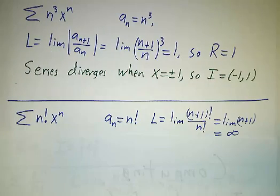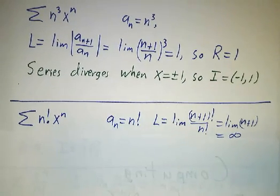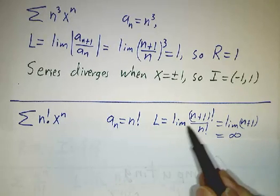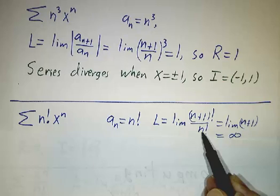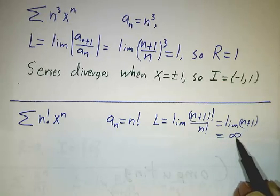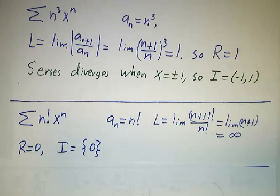Our next example is the sum of n factorial times x to the n. So a_n is n factorial, L is the limit of (n+1)! over n!, and that's n+1, and that goes to infinity, so the radius of convergence is 0.